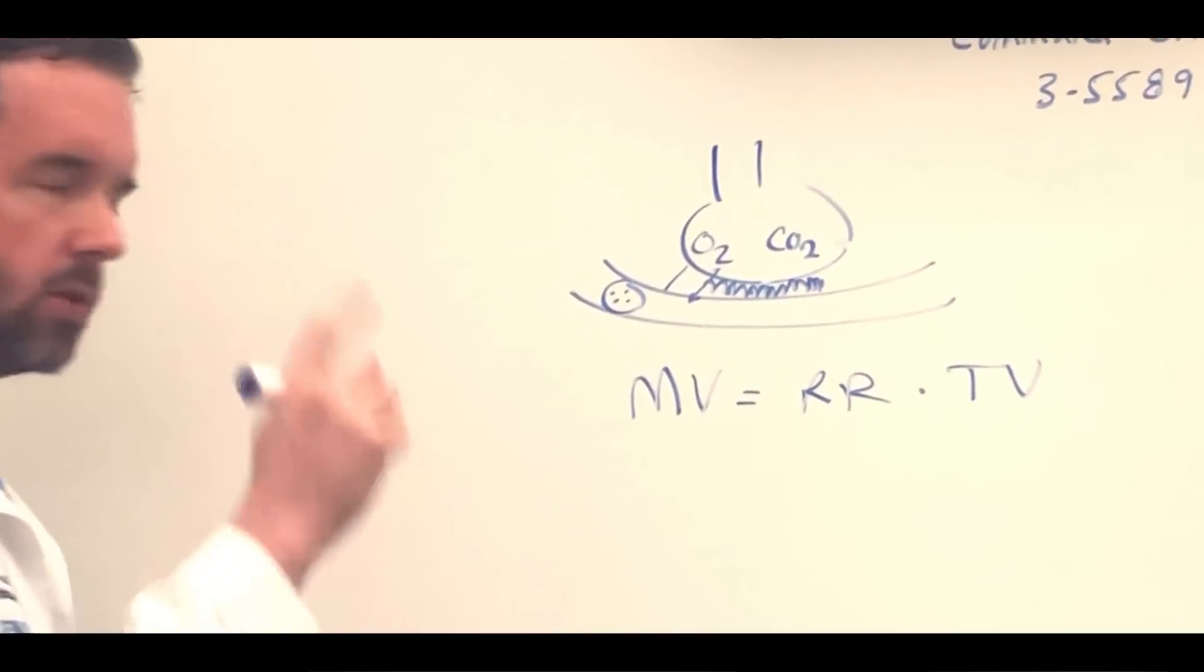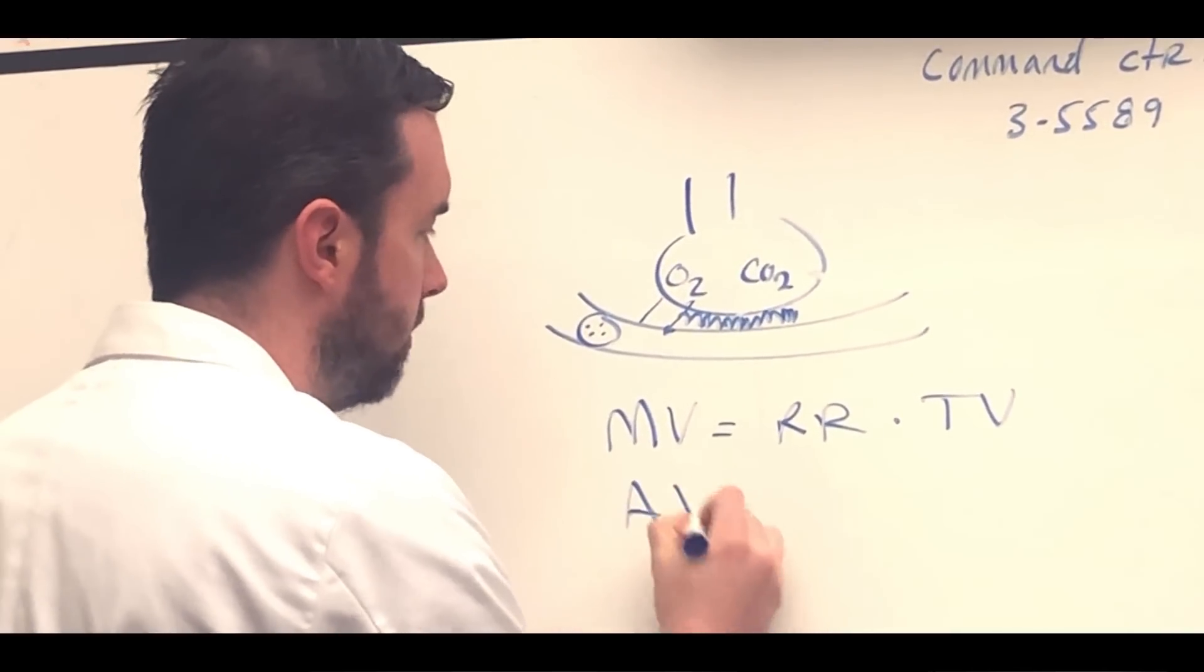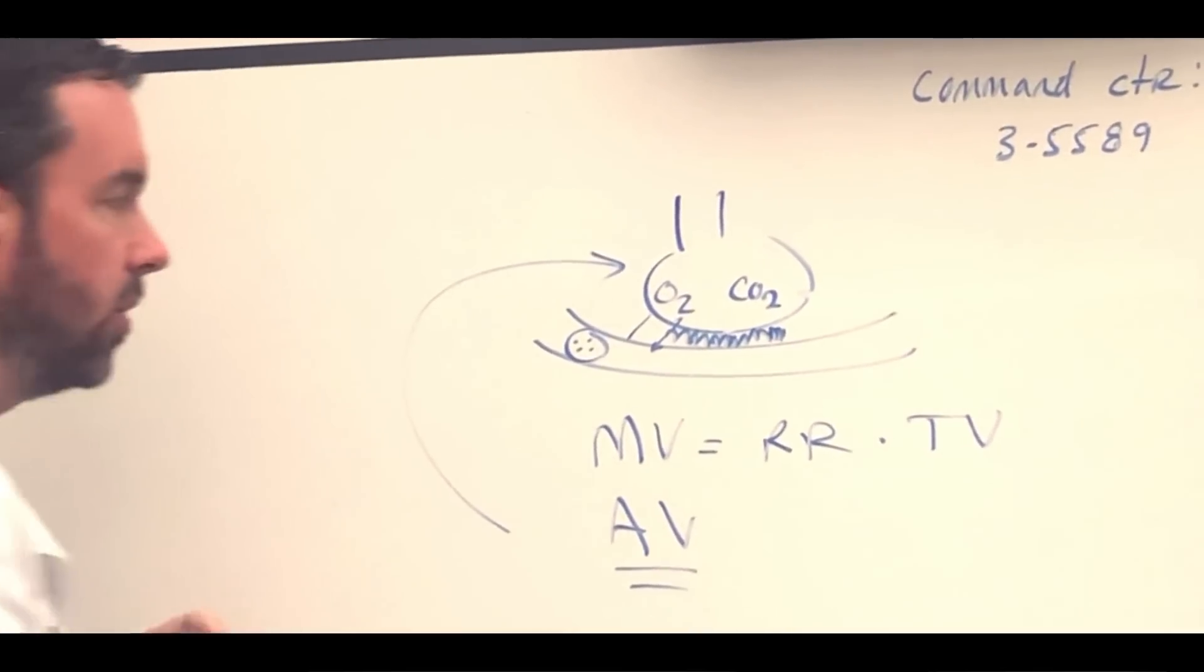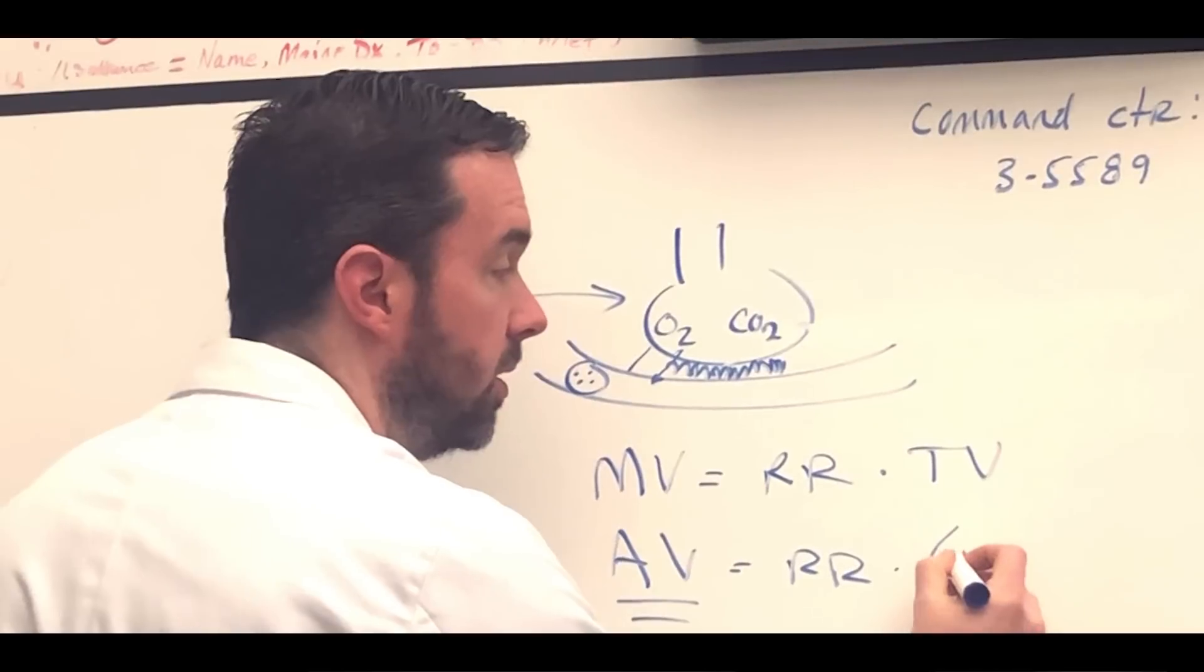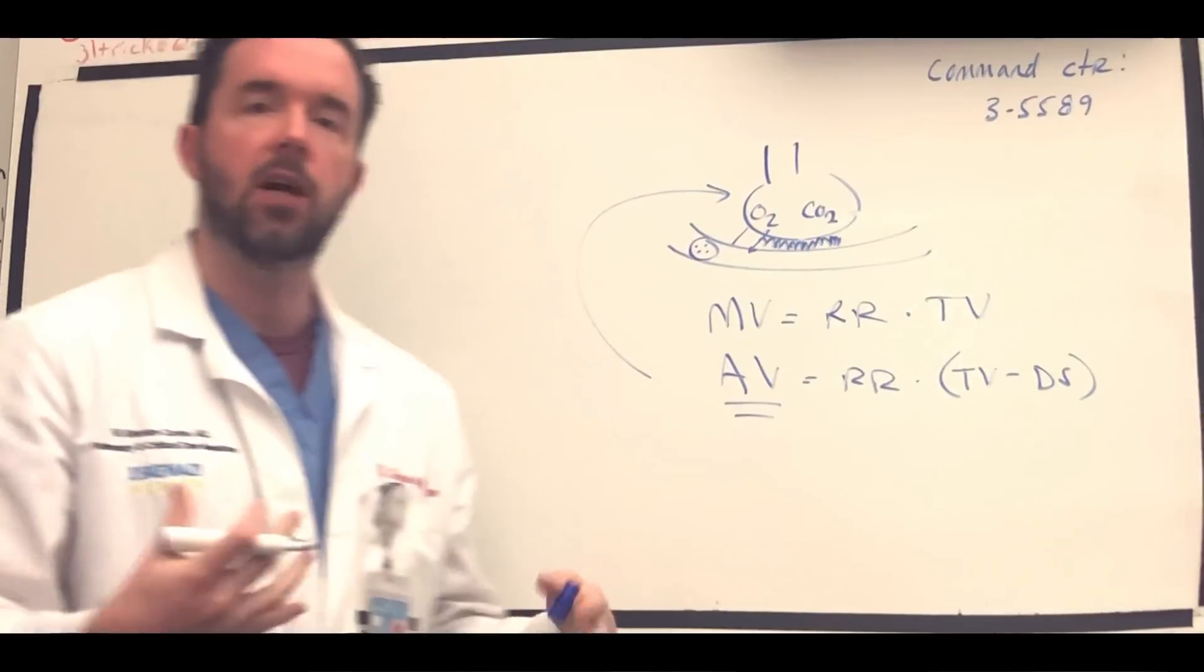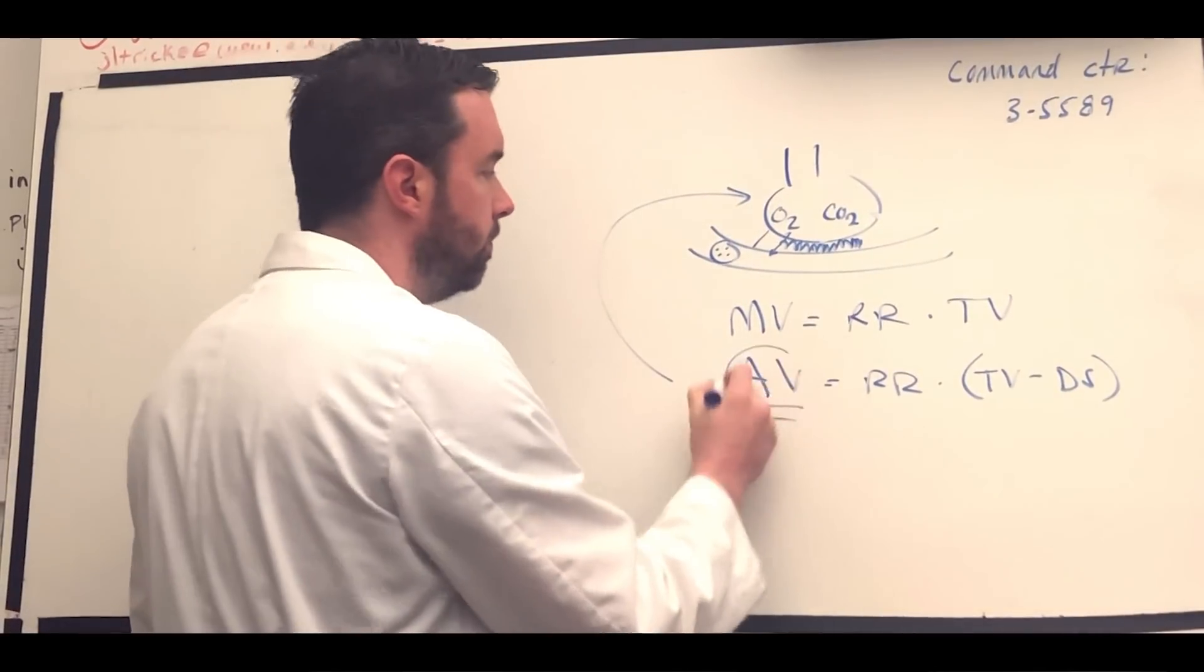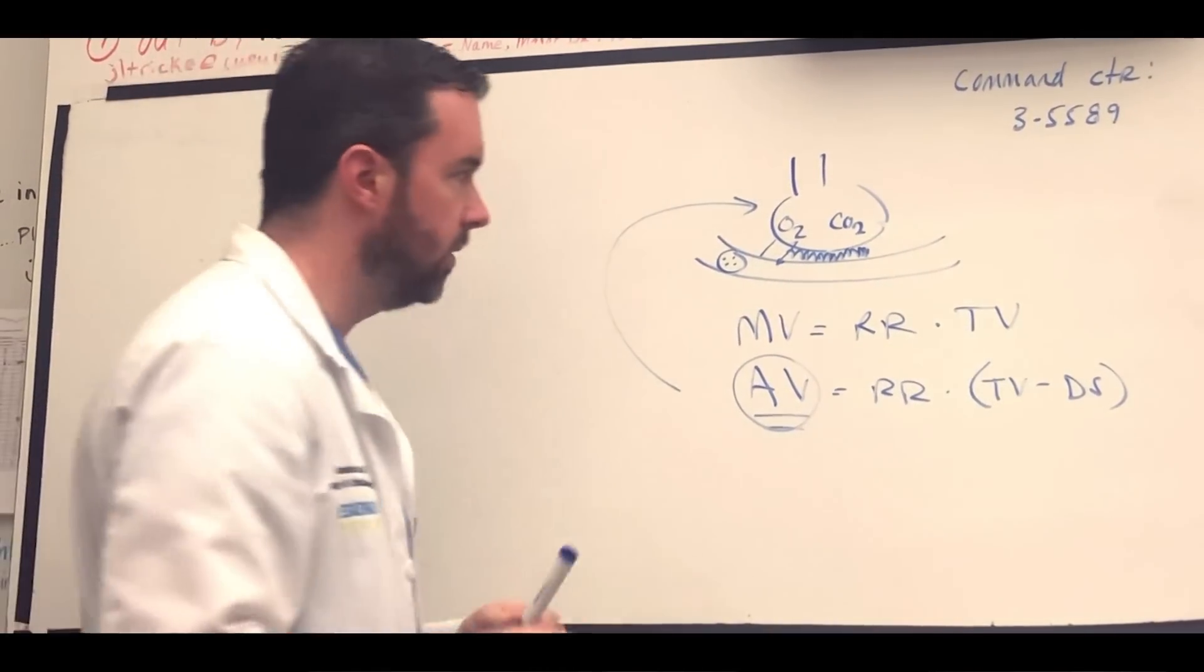We should also keep in mind in minute ventilation that when it comes to the tidal volume, we have this concept of alveolar ventilation. This is the ventilation that's actually happening at the alveolus. In alveolar ventilation, you're going to have the respiratory rate times the tidal volume minus the dead space. The dead space would be like the conducting airways, and the airways that aren't participating in gas exchange. The alveolar ventilation is really what we're trying to impact when we talk about CO2 transit and removal.